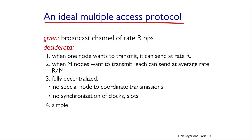Let's look at the features of an ideal MAC protocol. Given a broadcast channel of rate R-BPS: if there is one node that needs to transmit data, then it can use the entire bandwidth and transmit at a rate of R-BPS. If there are M nodes that want to transmit, then on average they would use their relative part. The algorithm should be decentralized — there should not be a special node to coordinate transmissions. There is no synchronization of clocks or transmission time gaps, and the algorithm should be simple.